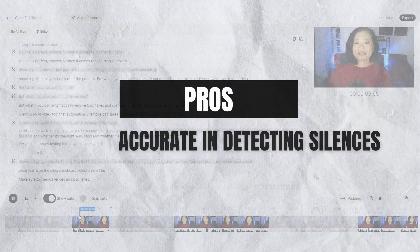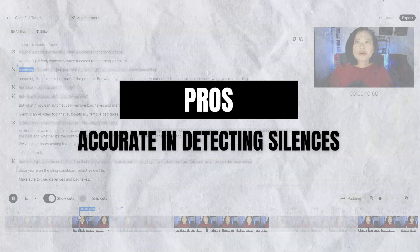Like most AI trimming tools out there, Gling is also very accurate when it comes to detecting silences, so that's something you don't have to worry about. So those are the great things about Gling — now let's talk about some of the things that might keep you from getting it.